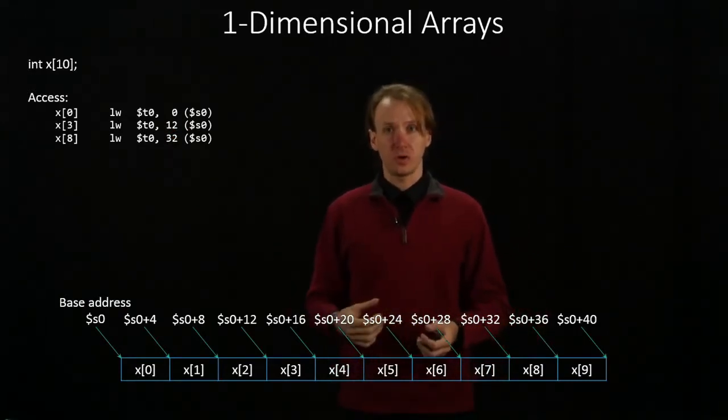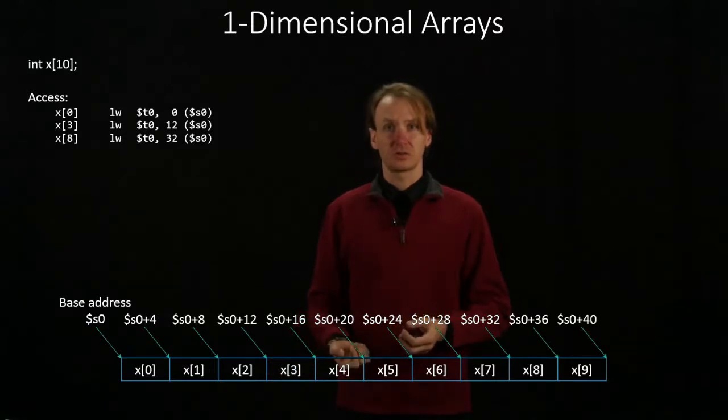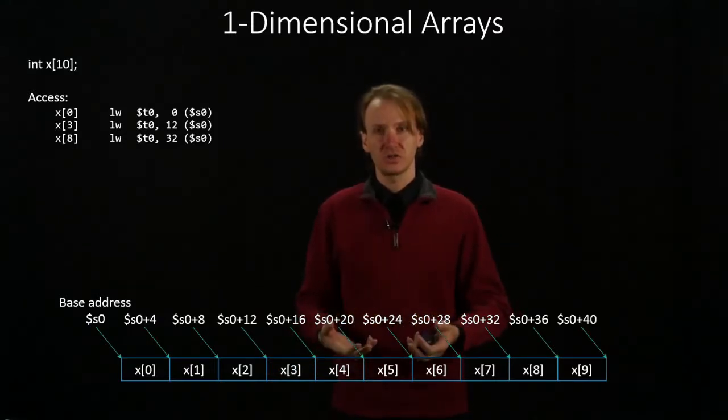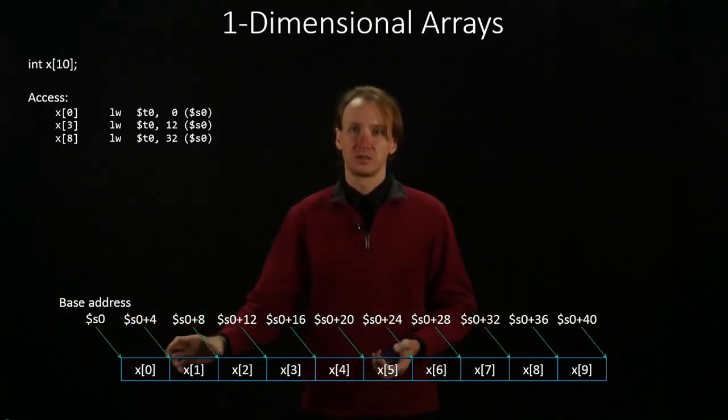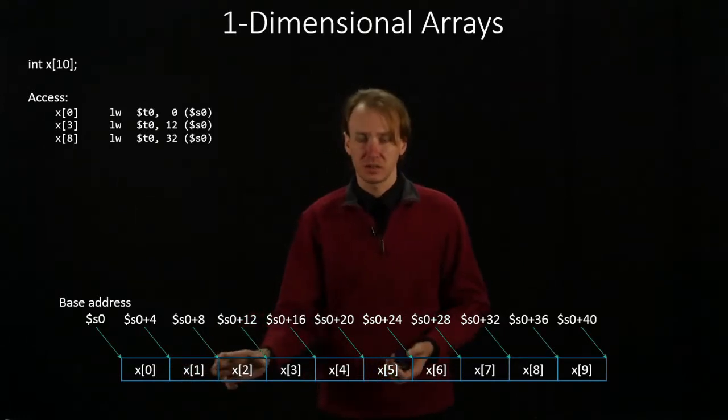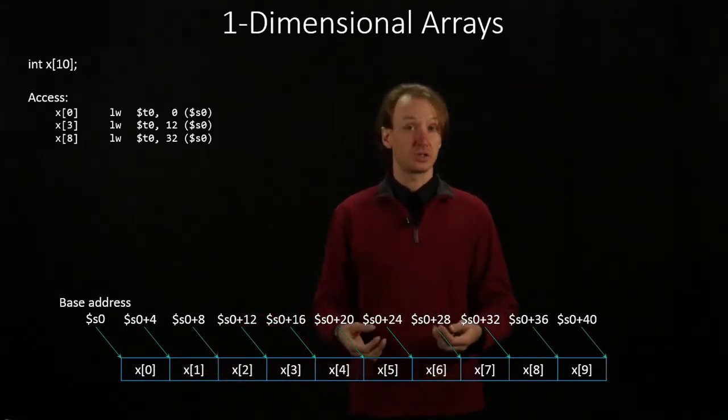Turns out we get that 4 because that's the size of our integers. This is an array of integers. Each of those integers are 4 bytes large. So we go down 4 bytes to get to the next element in our array each time.